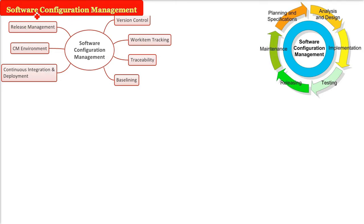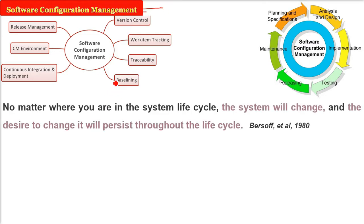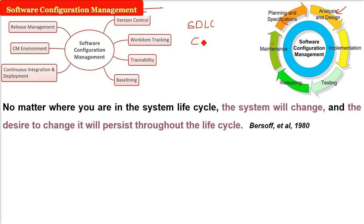Software Configuration Management is all about management — organizing and planning in a way such that different activities in the software development life cycle, which can be tangible or intangible, are configured so that everyone benefits from this planning.